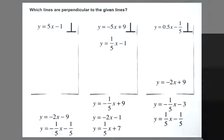y = -2x + 9 is perpendicular to y = 0.5x - 1/5. That's because one-half, or 0.5, is flipped and the sign is changed from negative 2.